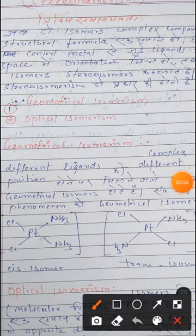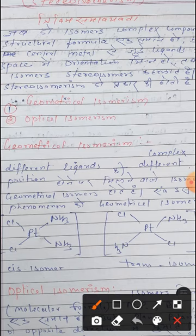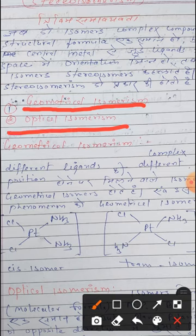بچوں، stereo isomerism کو further دو categories میں divide کیا جا سکتا ہے: first geometrical isomerism (جامیتی سماویتا) اور second optical isomerism (پرکاشک سماویتا)۔